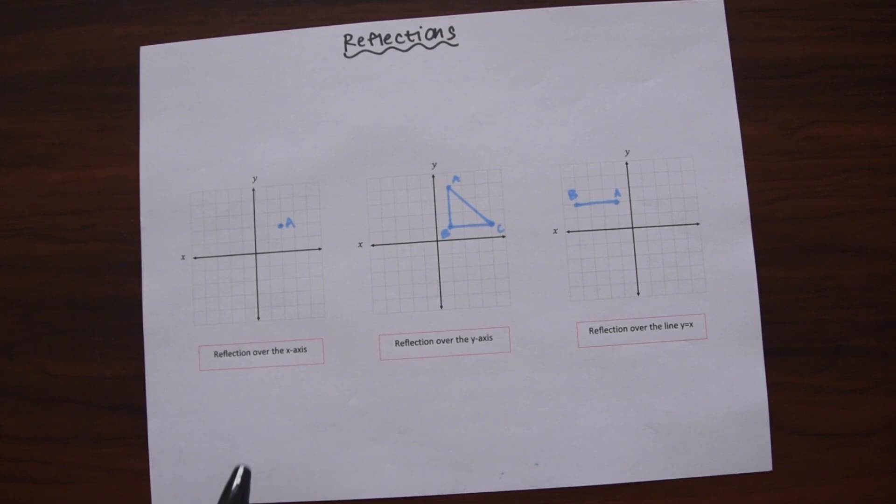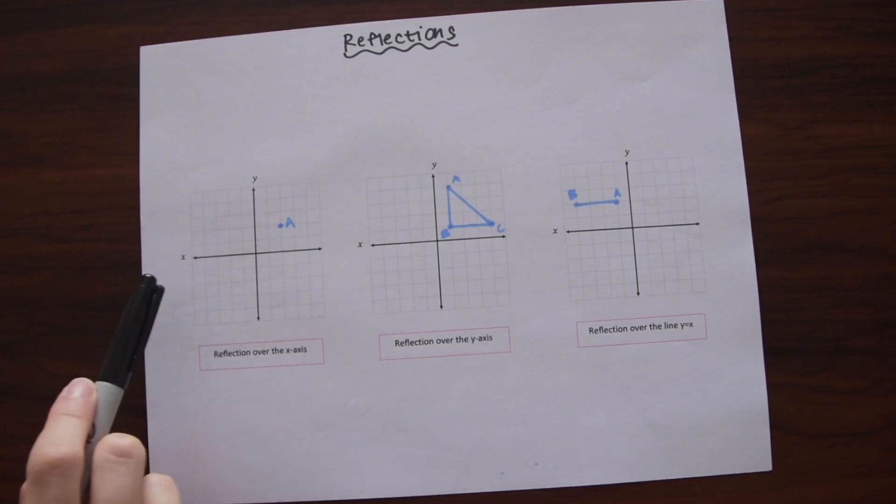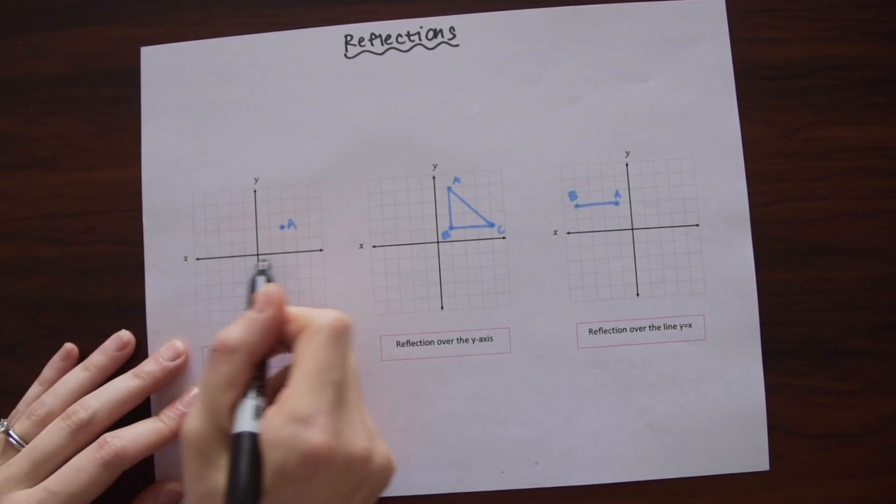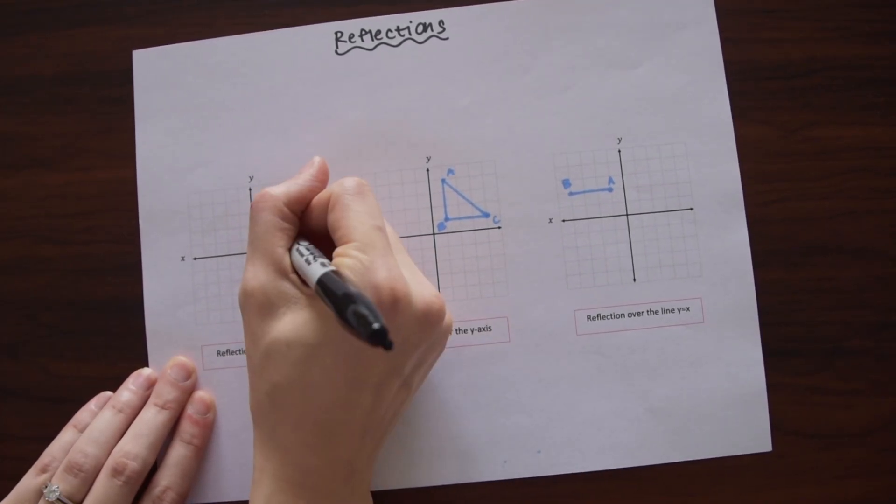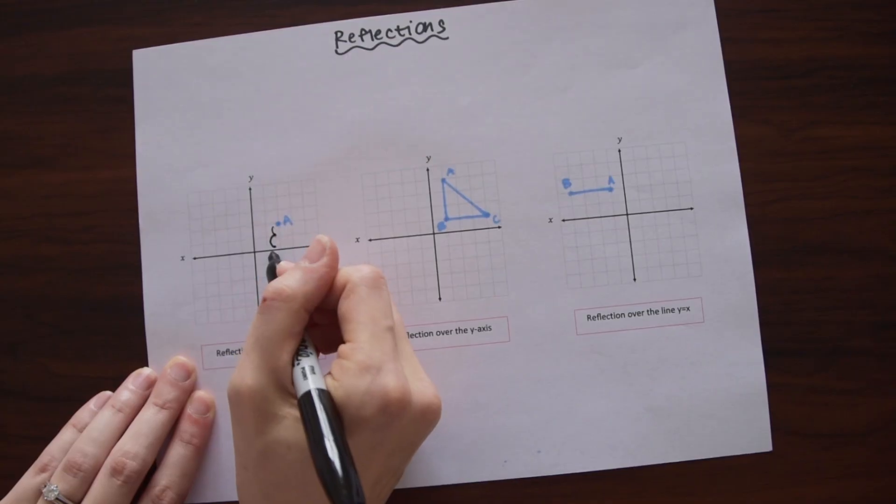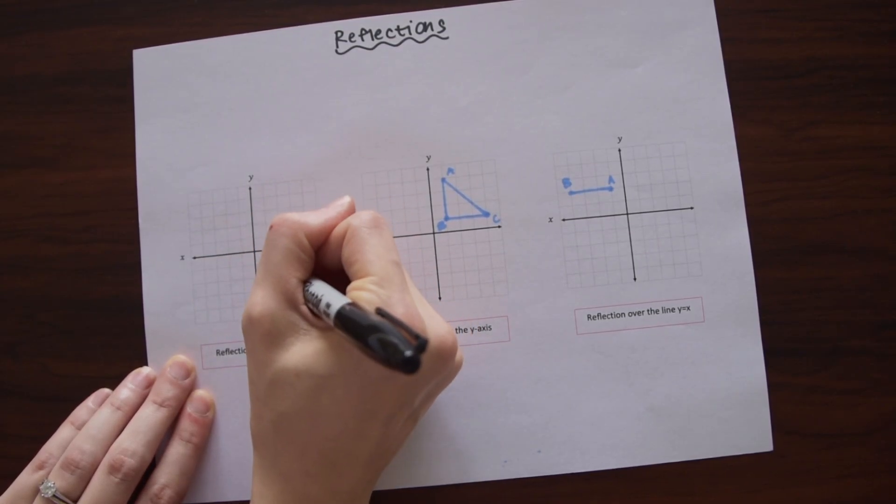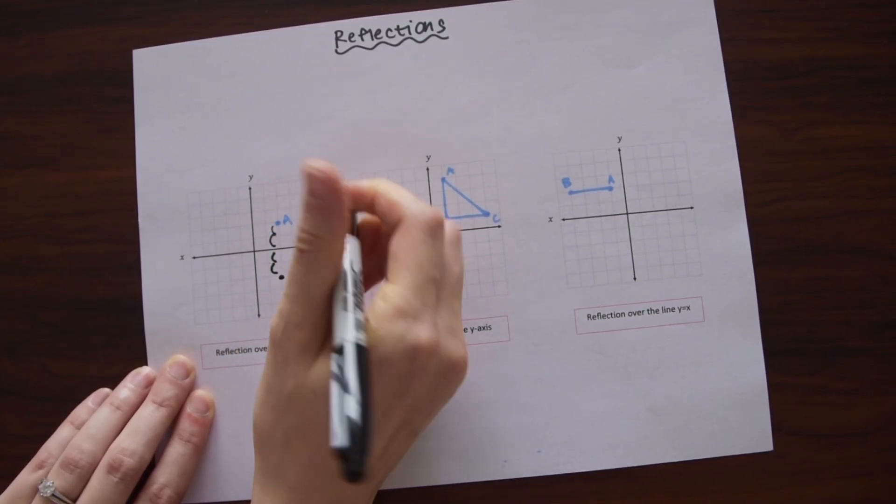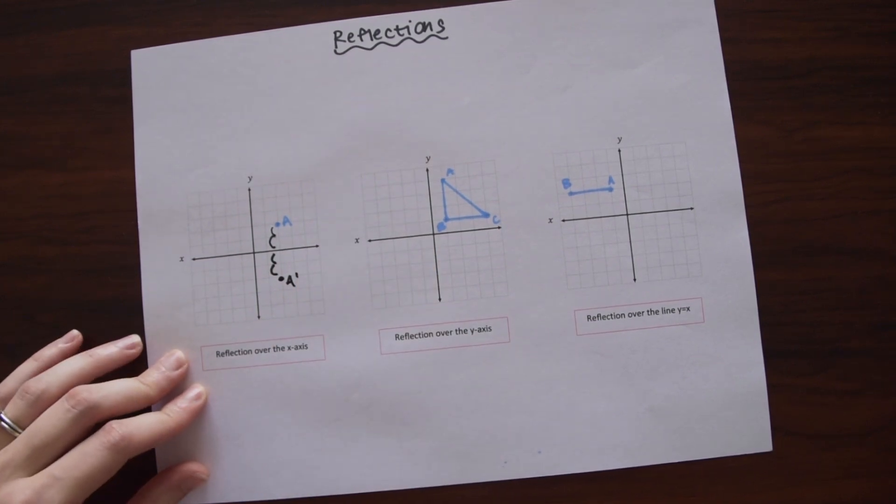For our first example we're going to reflect point A over the x-axis. So we have point A and notice this is the x-axis, this horizontal line here. Notice it's two units away from the x-axis. So what we're going to want to do is have our new point A also two units away from the x-axis. And we'll just call this A prime for our new reflected point.